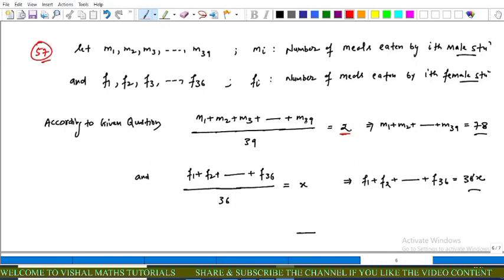This implies that m1 plus m2 plus all terms equals 78. Similarly, mean of female meals eaten is x which equals f1 plus f2 up to f36 upon 36.